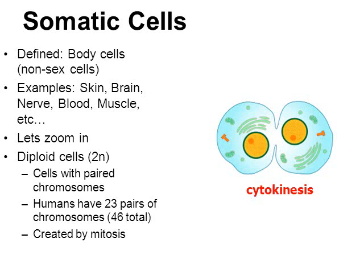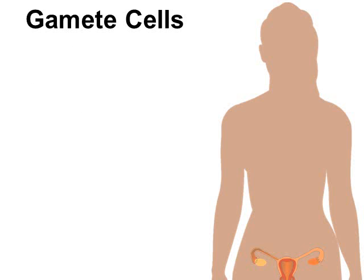What about the other topic of this video — haploid cells? Before we go into haploid cells, we need to examine some other terms first. We need to examine what are called gametes. Gametes, by definition, are what we call sex cells.